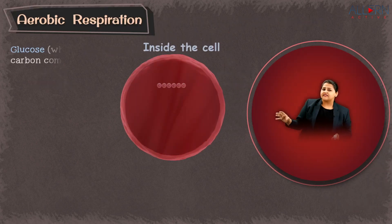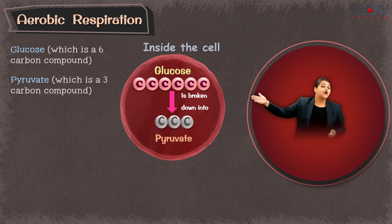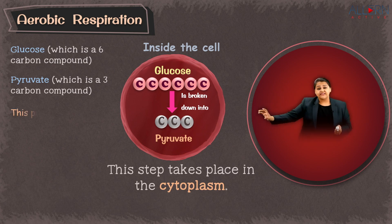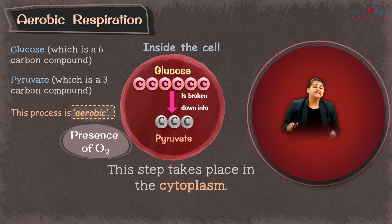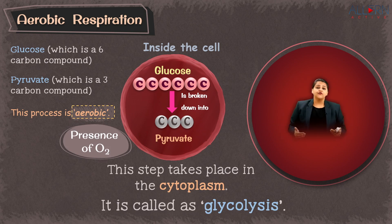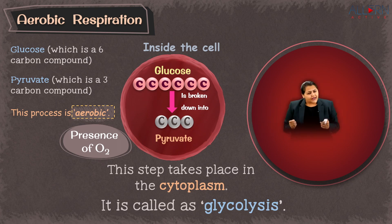In aerobic respiration, inside the cell we have the six-carbon glucose molecule breaking down into three-carbon pyruvic acid, also called pyruvate, in the cytoplasm. In the presence of oxygen, this aerobic process — glycolysis — will then further proceed into the Krebs cycle and then the electron transfer chain, giving us high amounts of energy.